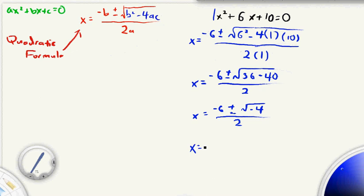So this is going to turn into x equals negative 6 plus or minus, so we take the square root of 4, so that's 2. And we're going to call it 2i to take care of that little negative there, and then over 2.